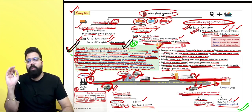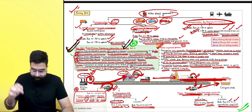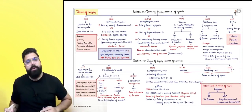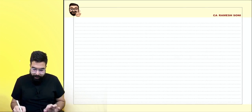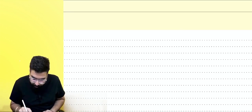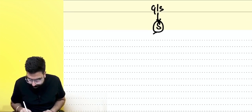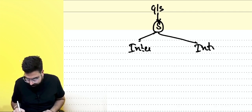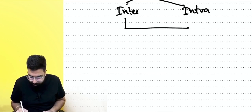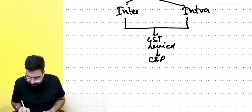The next chapter we are going to revise is the chapter of time of supply. Let's take a quick linking first. Whenever goods or services are being supplied, supply can be either interstate or intrastate. GST will be levied, and once GST is levied, it has to be collected and paid by a taxable person.